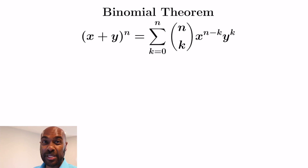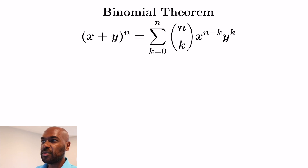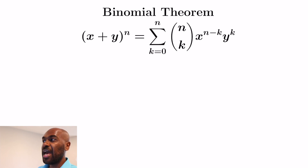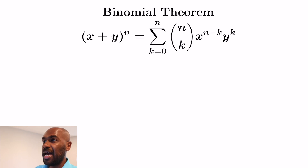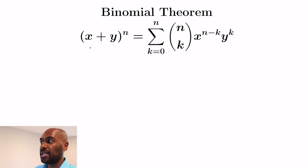Today we're going to talk about some interesting applications of the binomial theorem to counting. The binomial theorem states that if you have variables x and y and you raise x plus y to the n, then its expansion is the sum from k equals 0 to n of n choose k, x to the n minus k, y to the k. So the degree of any term is n, and the coefficient beside the term x to the n minus k, y to the k is precisely n choose k.